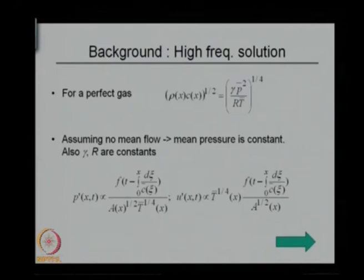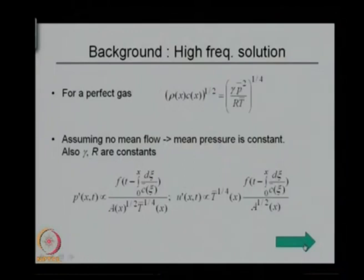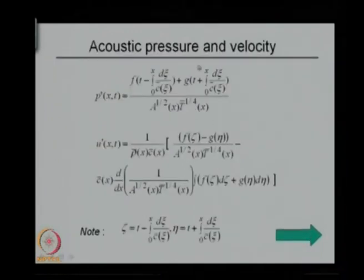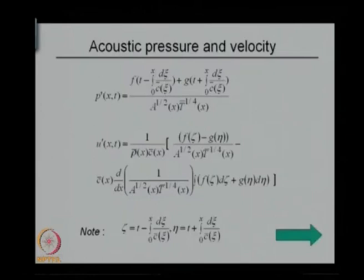We started with some heuristic arguments and assumptions, but later derived for some special temperature profiles that the pressure can indeed be expressed in this form, and the velocity was also in a similar form but with extra terms. The characteristic t minus x over c is now replaced by t minus the integral of d-psi over c, and the other one was t plus the integral of d-psi over c.